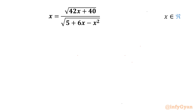Welcome back to Infigyan, my dear friends. Today in this video we are going to take up another challenging question from radical equations. The given equation is x equals square root of (42x + 40) over square root of (5 + 6x - x²), where x belongs to real numbers. So let's get started.